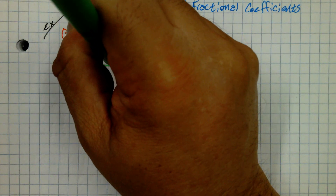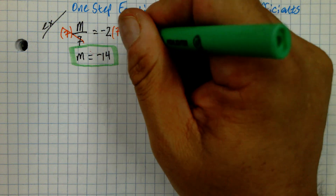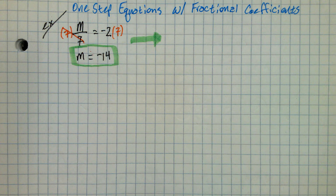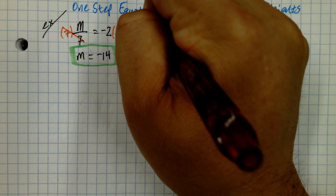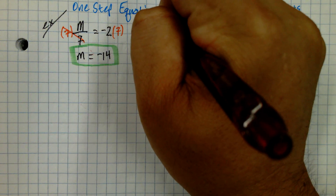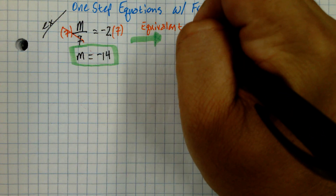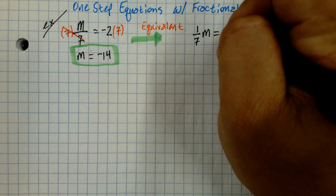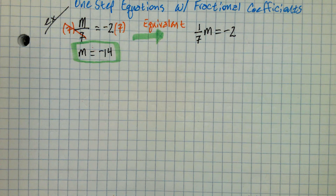Now, I'm going to give you what's an equivalent equation. That means it's basically the same equation written a little differently. So this is an equivalent equation. Anytime two equations give you the same answer, they're equivalent. Here it goes, and it looks very similar too: 1/7 times M equals negative 2.